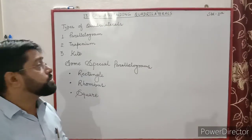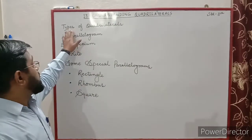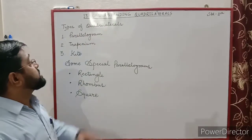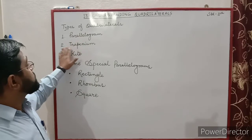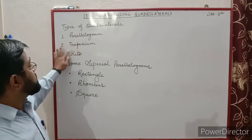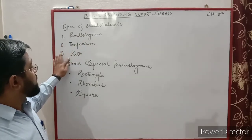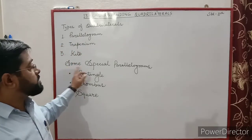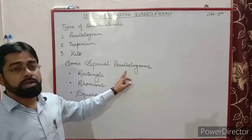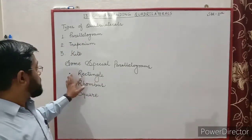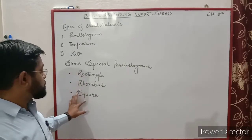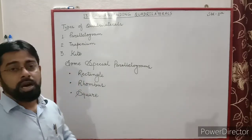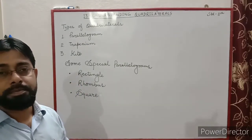Now, types of quadrilaterals: first, parallelogram; second, trapezium; third, kite. Some special parallelograms: rectangle, rhombus, square. Now we will discuss one by one.